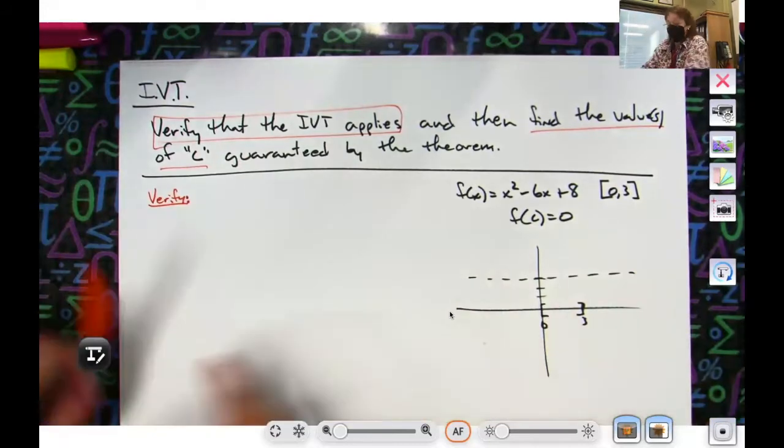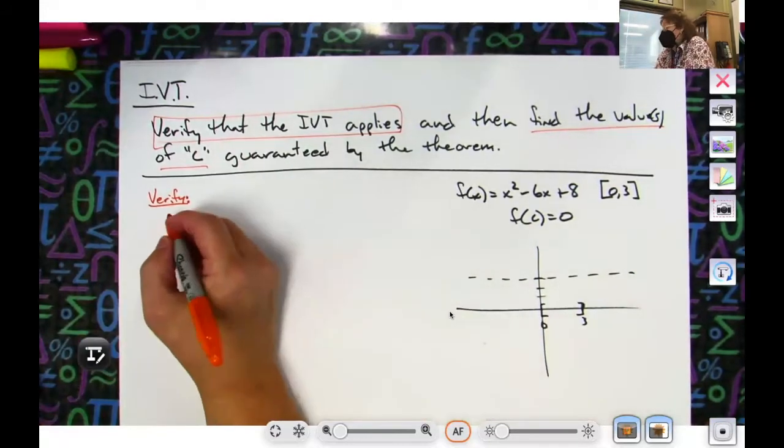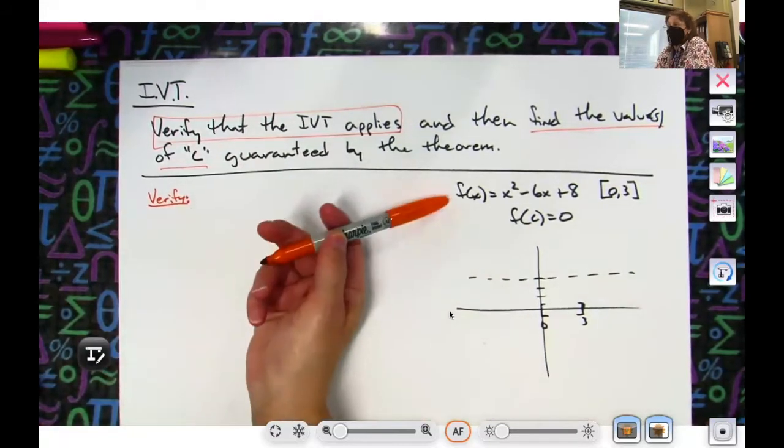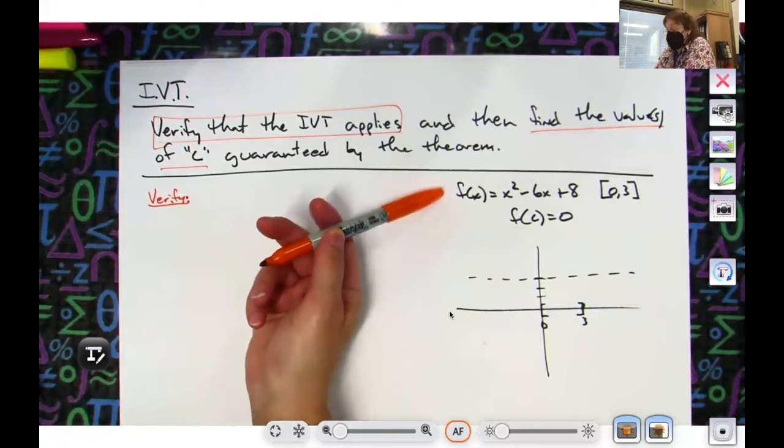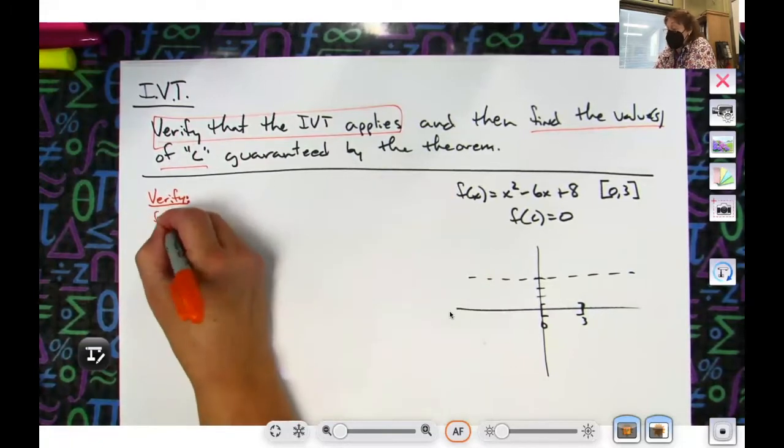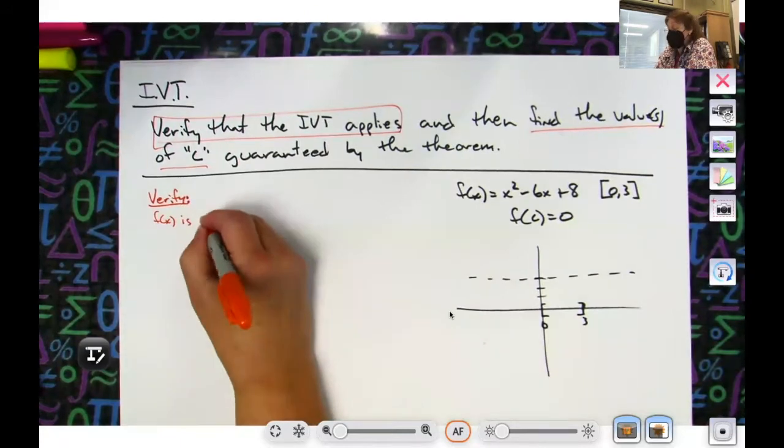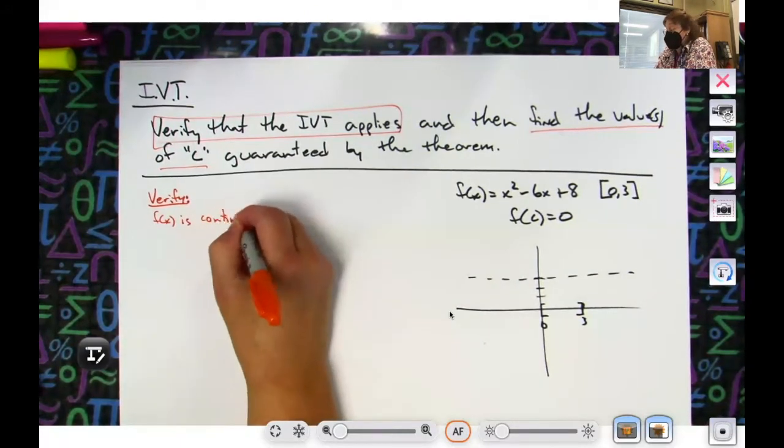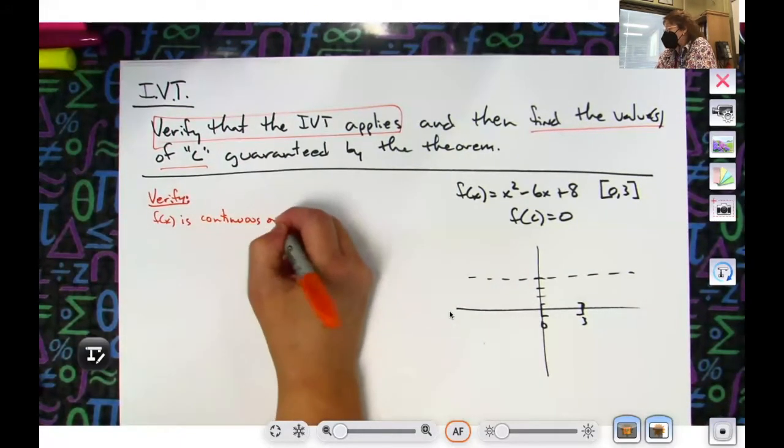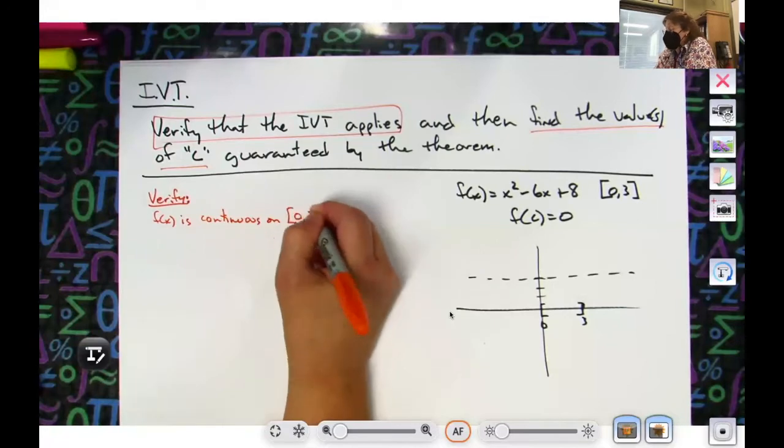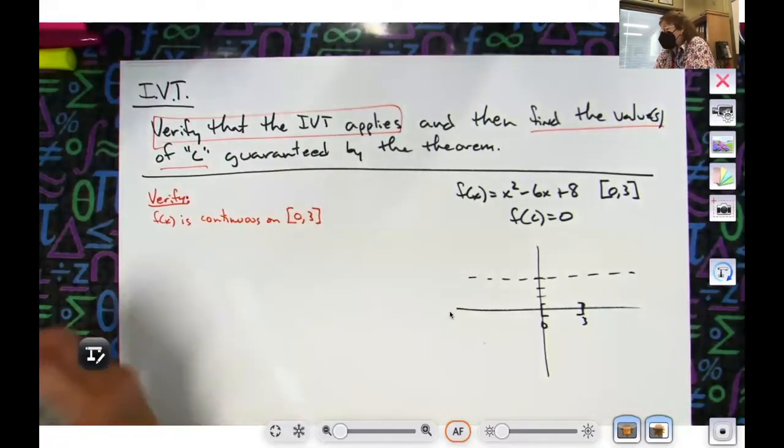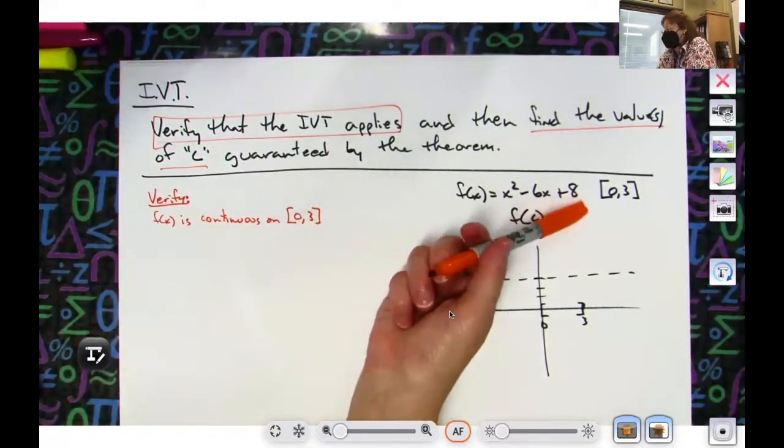Okay, all right, so let's first of all verify if it works. First of all, you're going to look at the function—is it a continuous function? It's a polynomial curve, so you got to tell me yep, f(x) is continuous. Not just continuous in general, but it's continuous on the given interval.